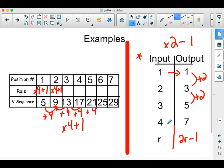So those are a few examples and ways of writing the pattern rule from a table of values.